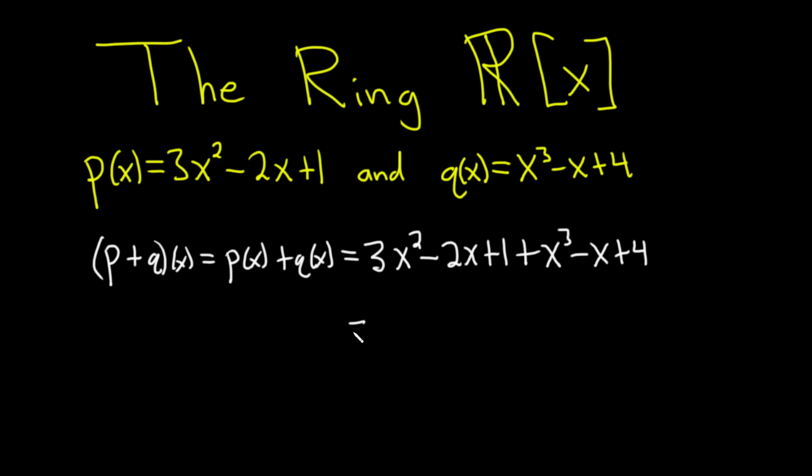So this is equal to, let's write the highest degree terms first. So x³, then 3x², and then -2x and -x is -3x, and then 1 + 4 is 5.